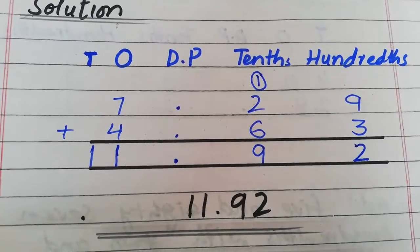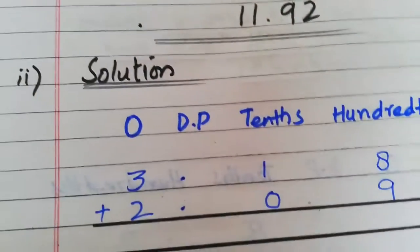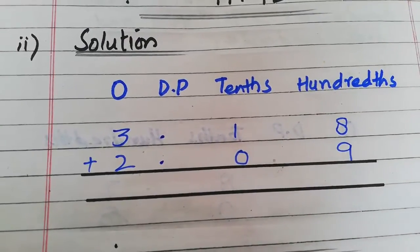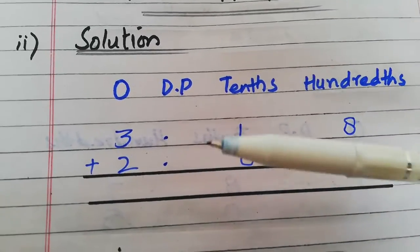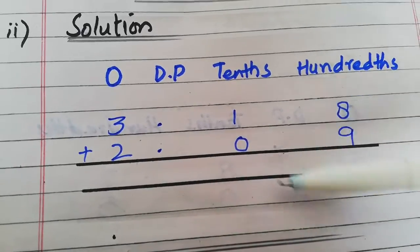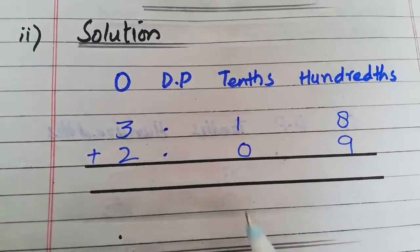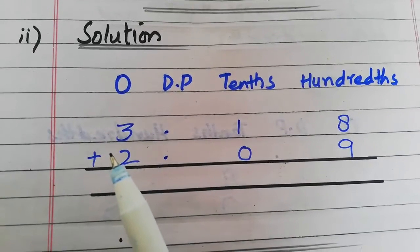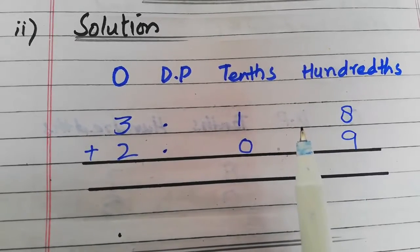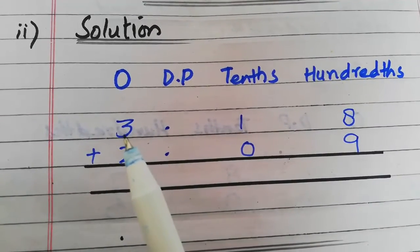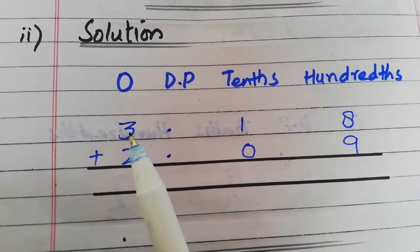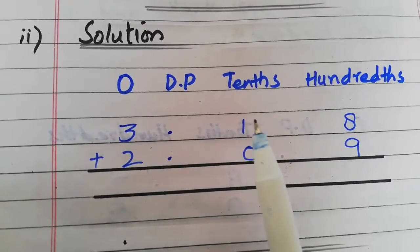اب ہم آئیں گے part two کی طرف۔ Part two میں ہمارے پاس آیا ہے: three point one eight plus two point zero nine۔ Point کی left side پر integral part ہے، point کے بعد right side پر fractional part ہے۔ Point کی نیچے point آئے گا۔ Ones میں three and two، tenths میں one and zero، hundredths میں eight and nine۔